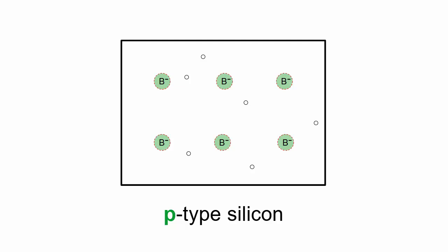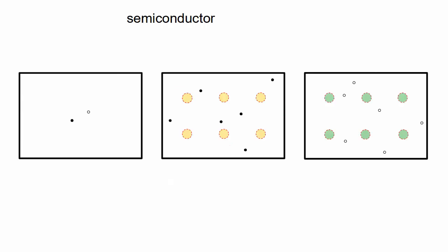The negatively charged boron atoms cannot move or carry current. Now for some terminology. Silicon can be intrinsic or extrinsic, and extrinsic can be N-type or P-type.